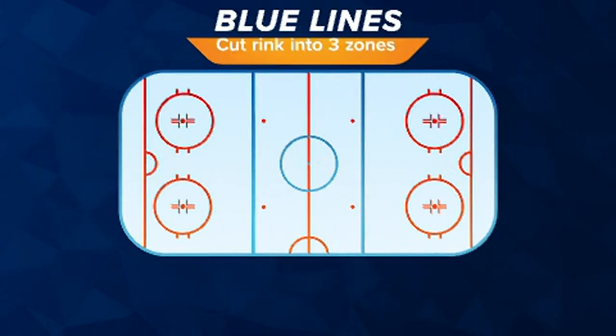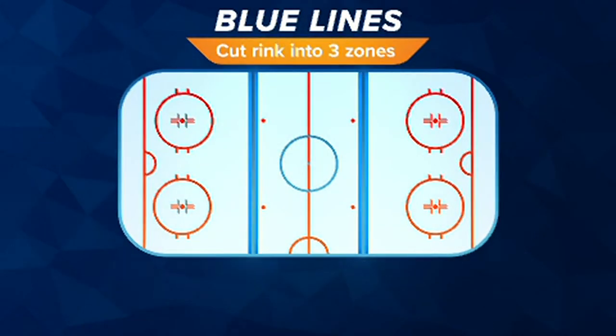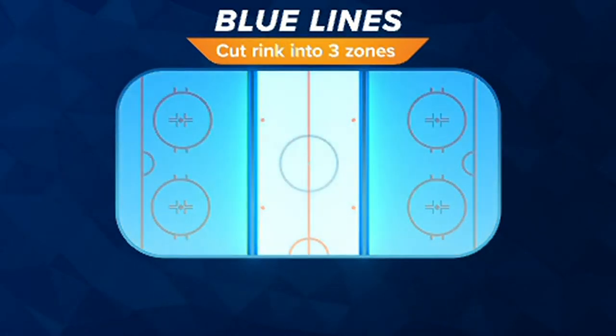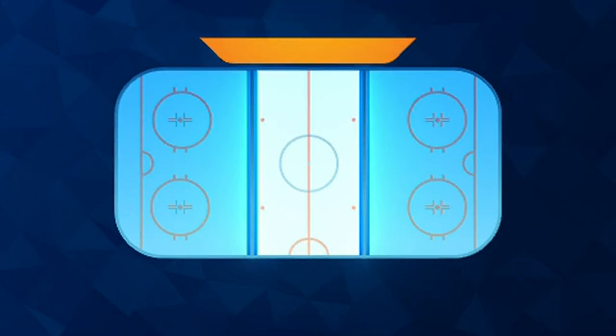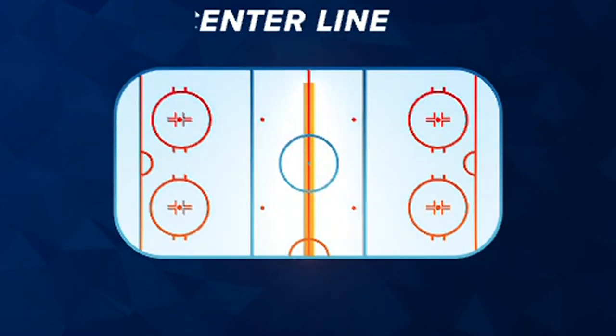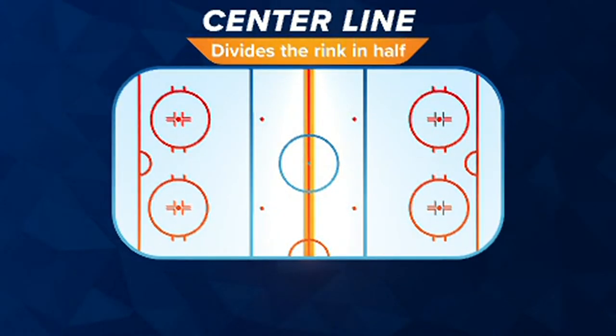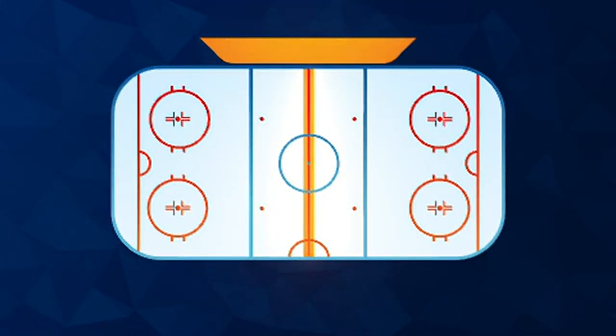Blue line: two blue lines cut the rink into three zones — the neutral zone and the end zones. Center line: the red line that divides the rink in half.